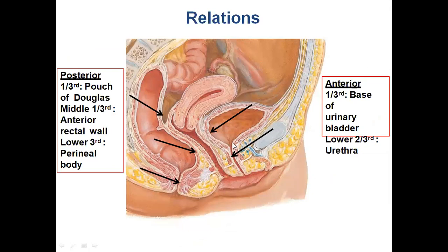Let us get the orientation of the female pelvic sagittal section. We have the pubic symphysis anteriorly. Behind the pubic symphysis we have the urinary bladder. The neck of the urinary bladder continues as the urethra, whose opening we have seen in the vestibule. Behind the urinary bladder we find the uterus in an anteverted and antiflexed position. This is the cervix and this is the vagina, with the vaginal opening — that is the hymen. Behind, we have the rectum and the anal opening. Anteriorly, the vagina is related to the base of the urinary bladder and the lower two-thirds of the urethra.